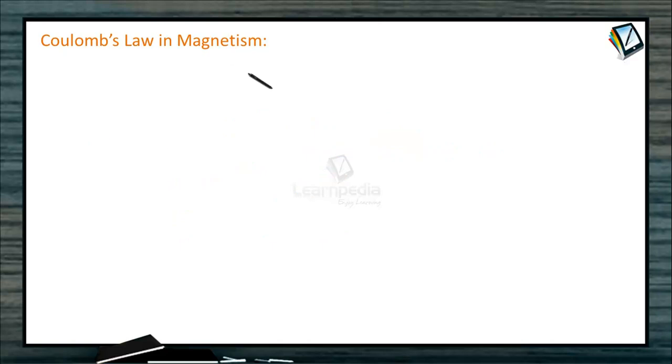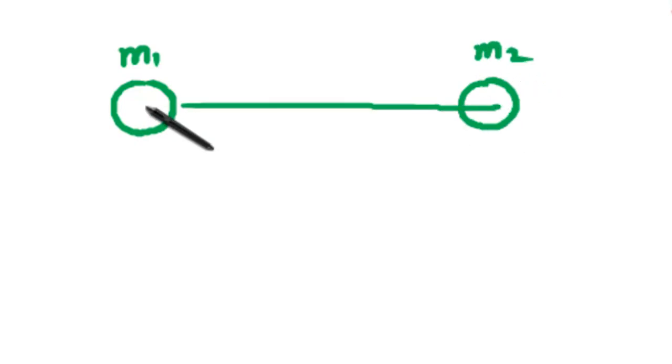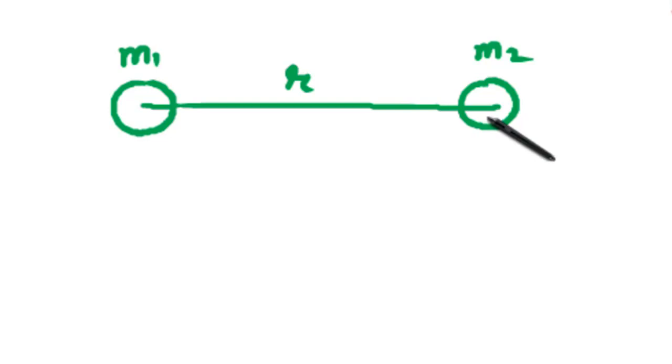First let us study Coulomb's Law in Magnetism. Suppose we take two magnetic poles, this is M1 pole strength, this pole of strength M2, distance between centre to centre is R. Then there will be a force between the two poles, the force of attraction or repulsion, that depends on whether the poles are like poles or unlike poles.